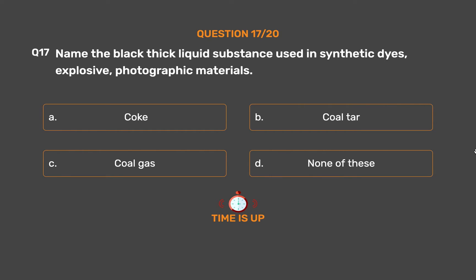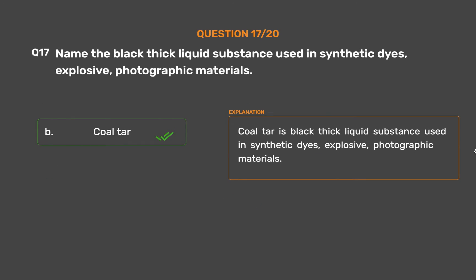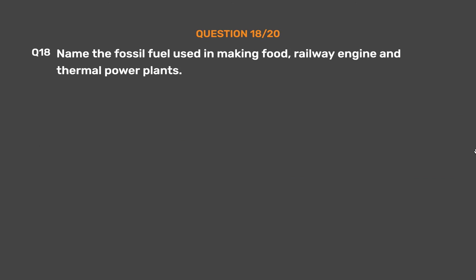The correct answer is Option B: Coal tar. Coal tar is a black thick liquid substance used in synthetic dyes, explosives, and photographic materials.